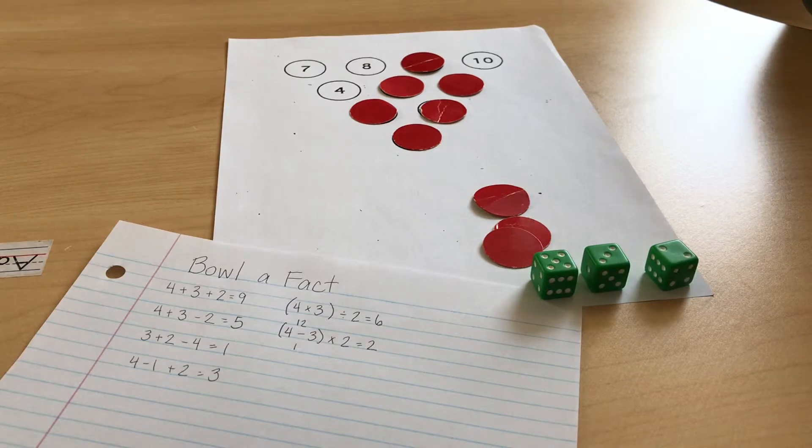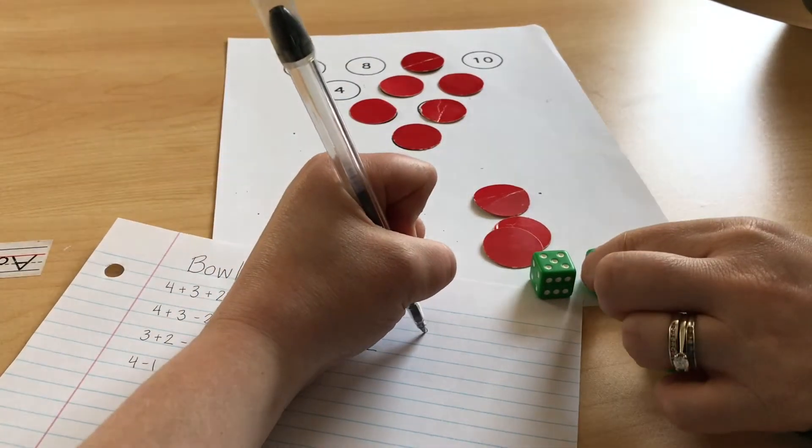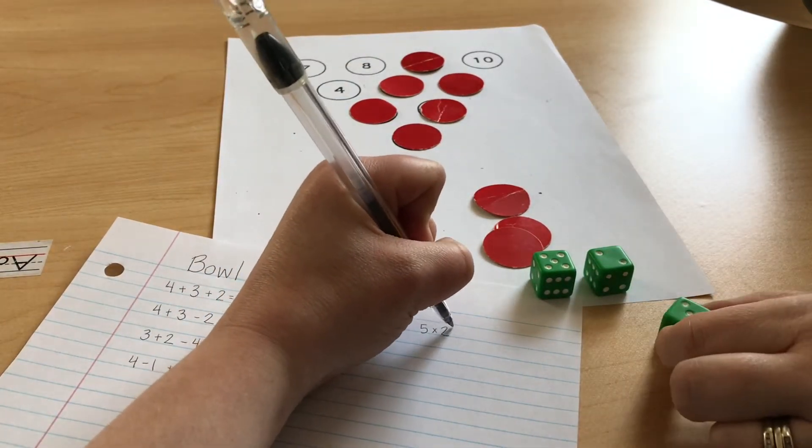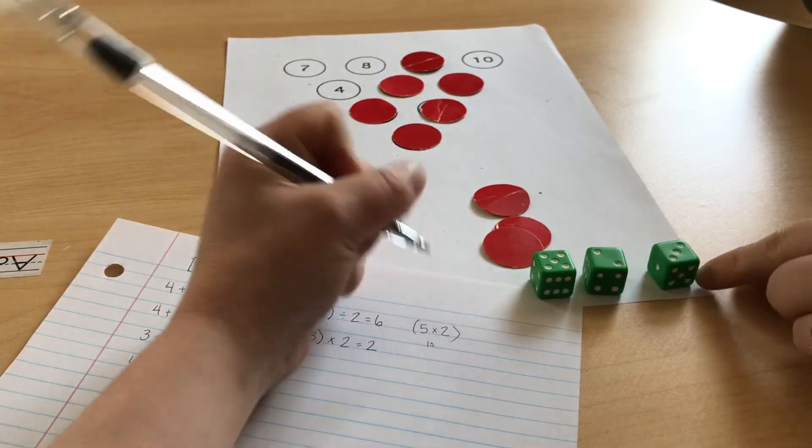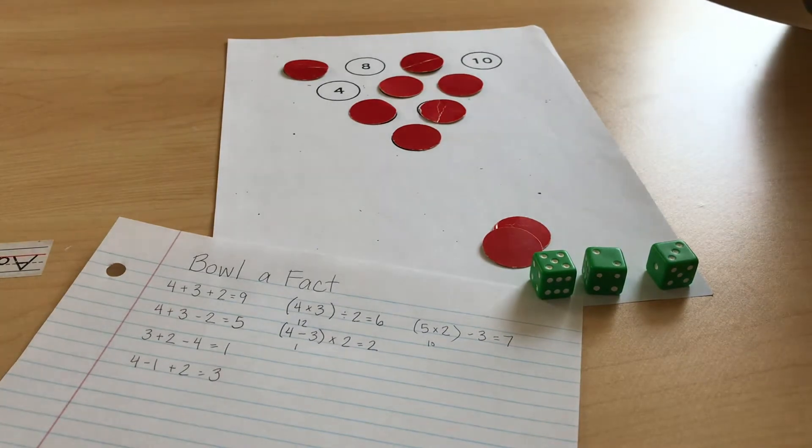I just rolled a five. So five and a three and a two. Looking at these numbers, I can go five times two, which is ten. Ten take away three equals seven. We are on our way.